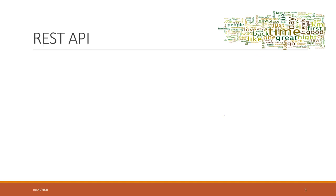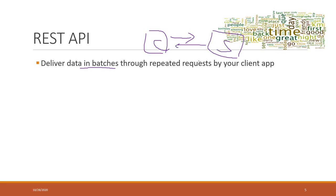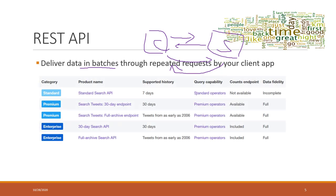The REST API delivers data in patches through repeated requests. Your client sends a request to the server, the server gives you the requested data, and then you send out another request and they send back more data. That is how the REST API works.